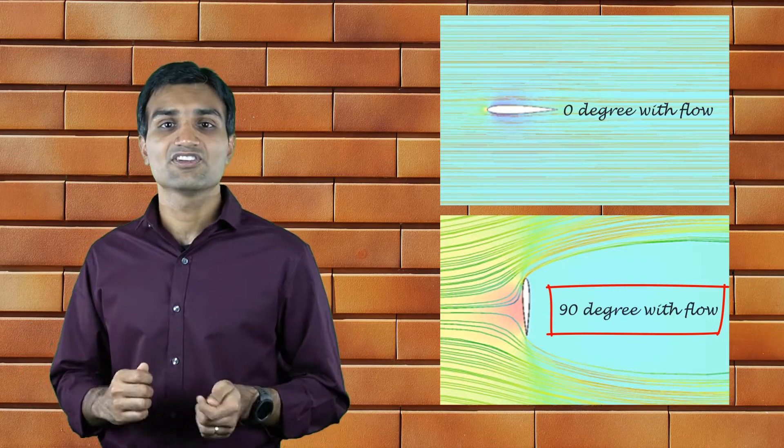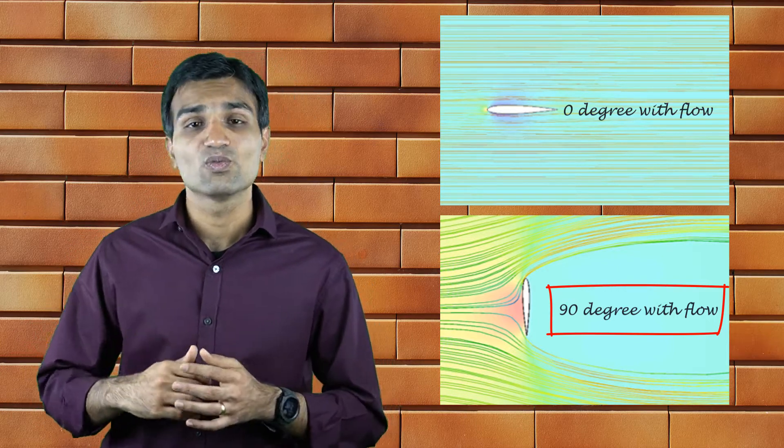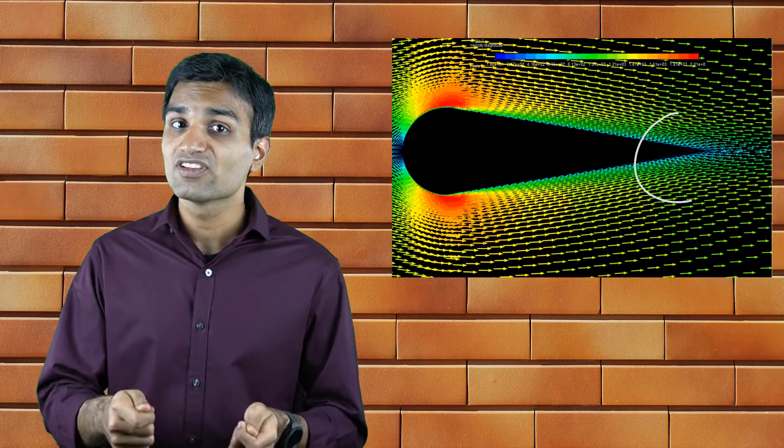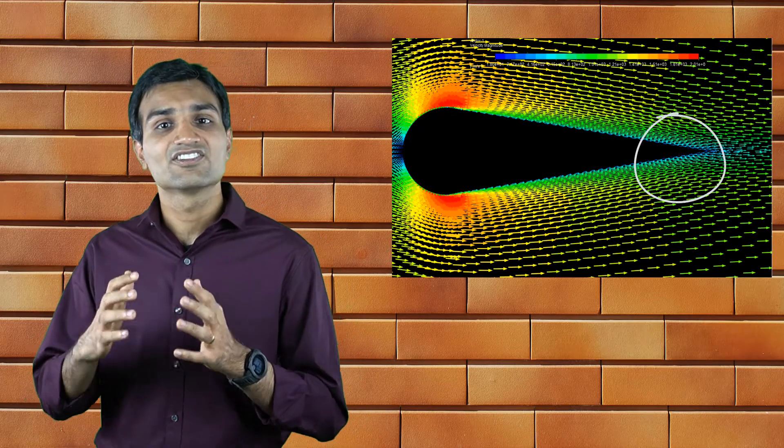One way of reducing the pressure drag would be to reduce the size of this wake. Streamlining the body reduces the adverse pressure gradient by spreading the overall resistive force over a large area. Therefore, if we add a tapered section to the cylinder, we observe that the boundary layer separation is delayed and leads to smaller sized wake. In fact, there is no flow separation in this particular streamlined geometry.